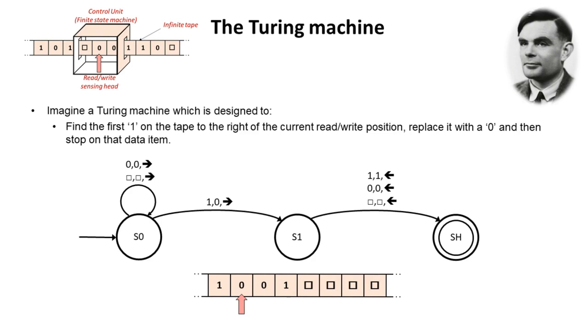Okay so let's push this into a little bit more context with an example. Imagine a Turing machine which is designed to find the first one on this tape to the right of the current read write position and replace it with a zero and then stop on that data item.